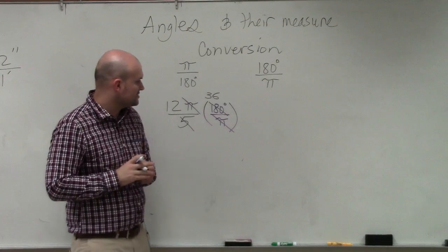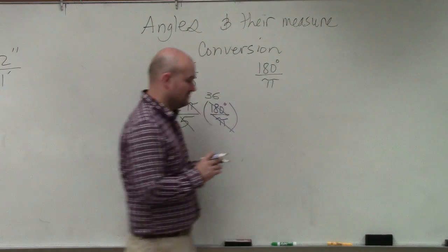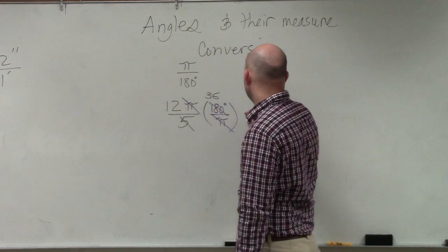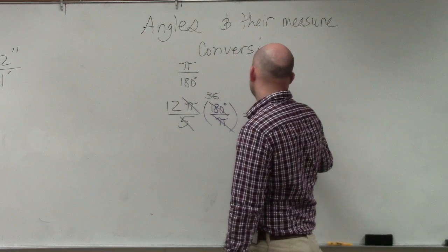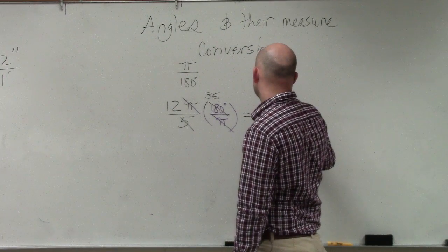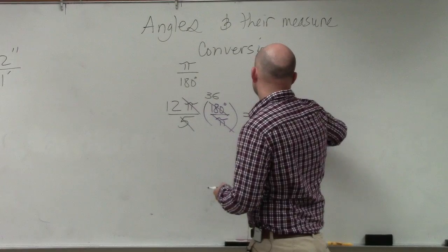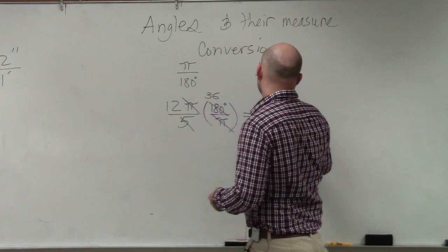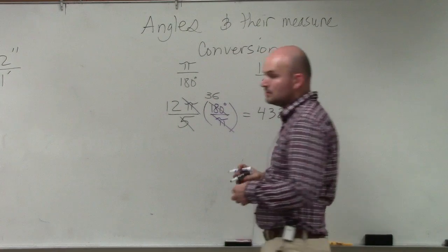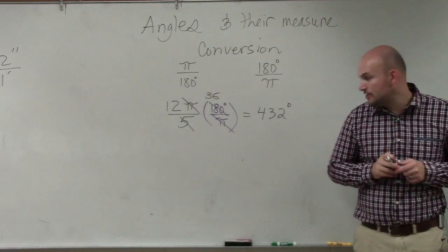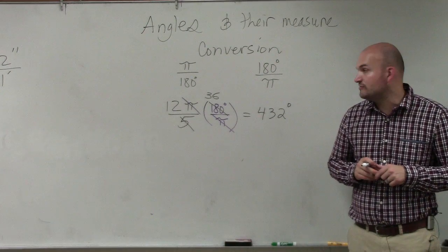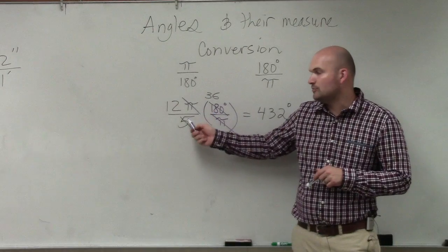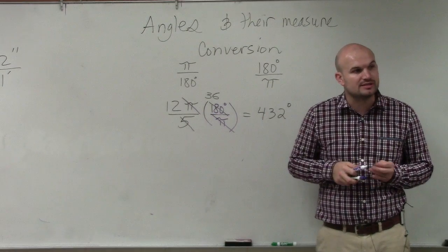And then I've got to do 12 times 36, which is 432 degrees. Anybody else agree? So 432 degrees is the equivalent. So 12 pi over 5 is equivalent to 432 degrees.